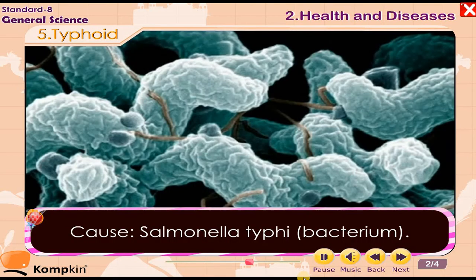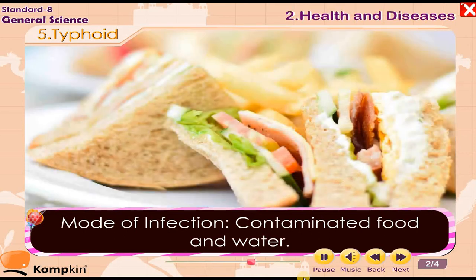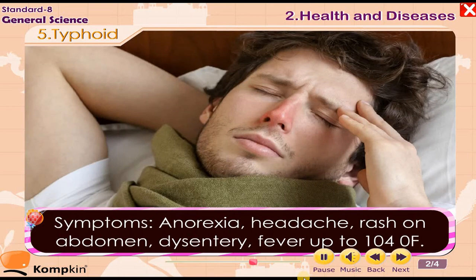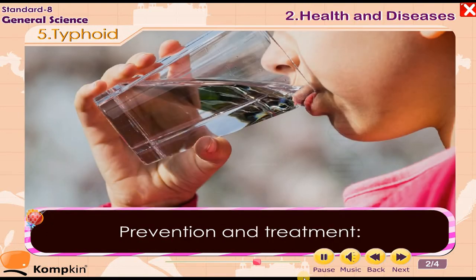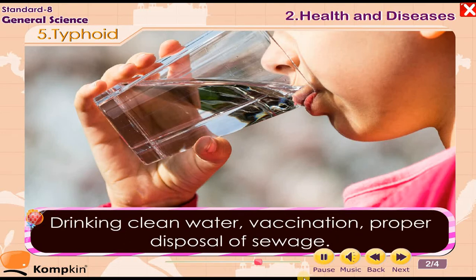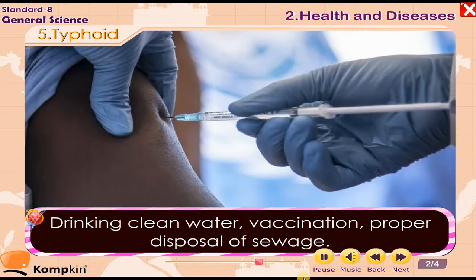5. Typhoid. Cause: Salmonella typhi bacterium. Mode of infection: Contaminated food and water. Symptoms: Anorexia, headache, rash on abdomen, dysentery, fever up to 104 Fahrenheit. Prevention and treatment: Drinking clean water, vaccination, proper disposal of sewage.